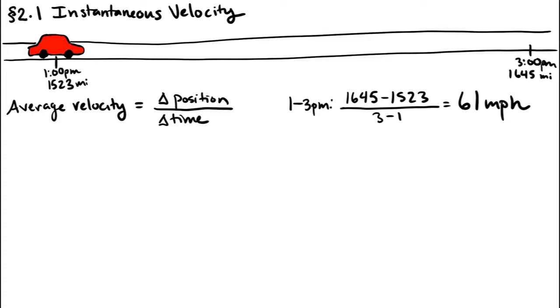You can get a more accurate picture of your velocity by looking at your odometer more often, taking the average over shorter intervals. Let's say you also looked at your odometer at 1:40 to see that it read 1567, and at 2 o'clock it read 1577.